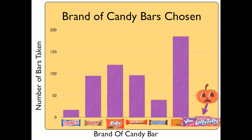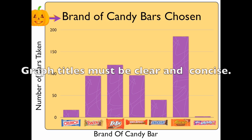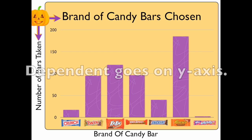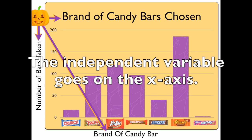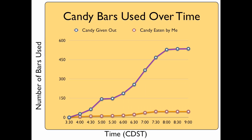Laffy Taffy I didn't hand out too much of at all. So I shouldn't buy Laffy Taffy then? No — that's a terrible candy, not worth it. I noticed that you actually have a really good title. I like how the title for the graph is very specific about what you're trying to show: 'brand of candy bars chosen.' I also like how on the y-axis you have the dependent variable, which is the number of candy bars, and on the x-axis the independent variable, which is the brand of the candy bar. The brand of the candy bar influences the number of bars taken.